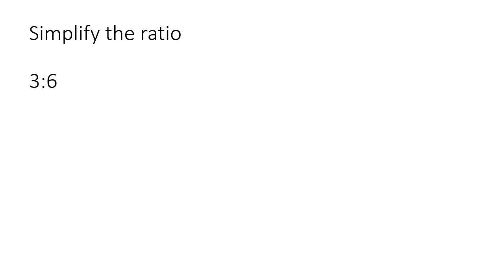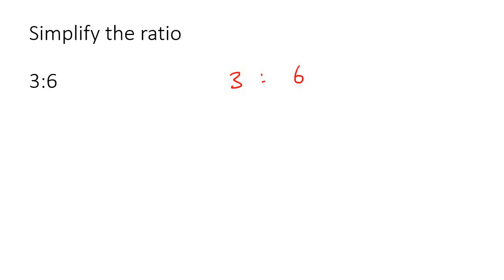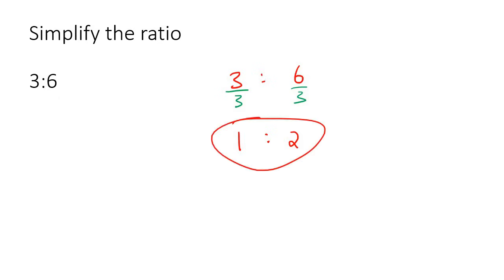So you need to simplify the numbers three to six. You need to be able to divide both of these numbers by the same number. We know that both of these can be divided by three, so that'll give you a one here and a two here. That cannot be any further simplified, so that would be the answer.